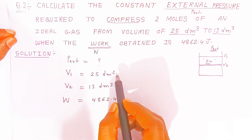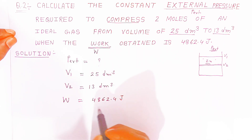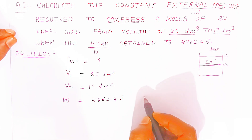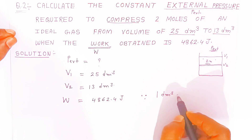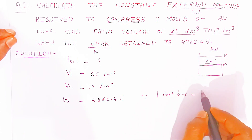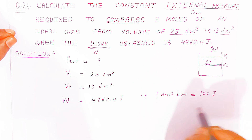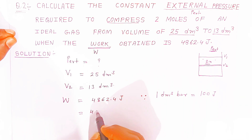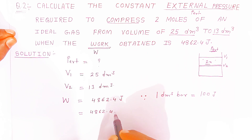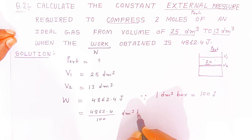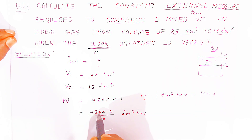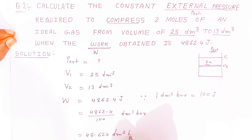So you have to convert J into dm³·bar. Since 1 dm³·bar is equal to 100 J, if you are converting J into dm³·bar you have to divide by 100. So 4862.4 divided by 100 gives 48.624 dm³·bar. This is the work value after unit conversion.